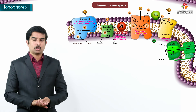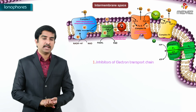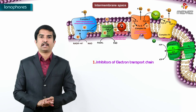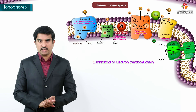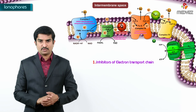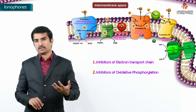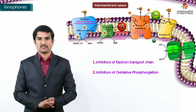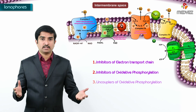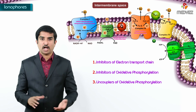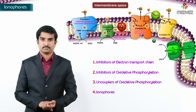The important ionophores are valinomycin, gramicidin, and nigericin. With this, we have completed the topic of inhibitors of the electron transport chain, inhibitors of oxidative phosphorylation, uncouplers, and ionophores.